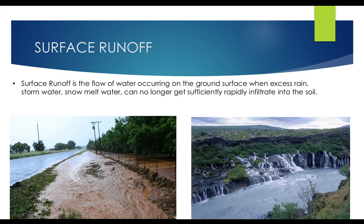Next — surface runoff. After water is infiltrated, when the soil cannot hold water anymore, it starts flowing on the surface. The process in which water flows on the surface of the earth is called surface runoff, occurring where the soil is completely saturated. This water flows to the nearest water body — stream, river, or sea. Surface runoff is the flow of water occurring on the ground surface when excess rainwater or snowmelt water can no longer be sufficiently rapidly infiltrated into the soil.